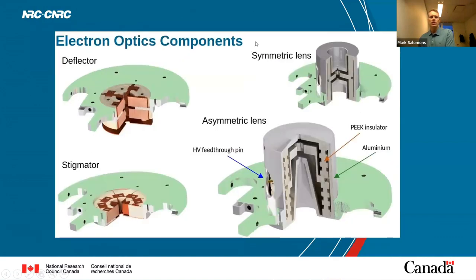On the right we have our lenses — a very simple lens with a plate in the middle that you apply your voltage to and then grounded caps. We've worked out all the distances, tested it, with an insulator separating the two sections. There's an asymmetric lens for once you get close to the sample, where you want the lens as close to the sample as possible. We've also developed double plate deflectors for symmetric or parallel deflection, and stigmators to shape the beam.